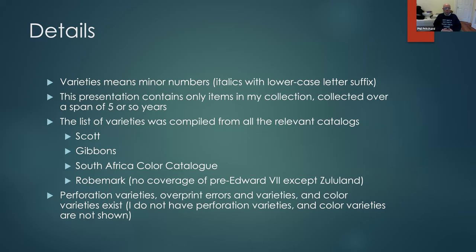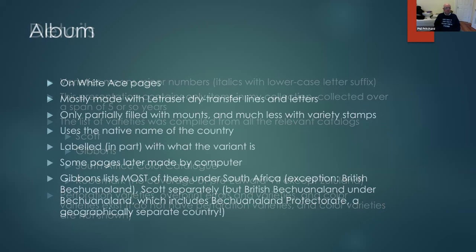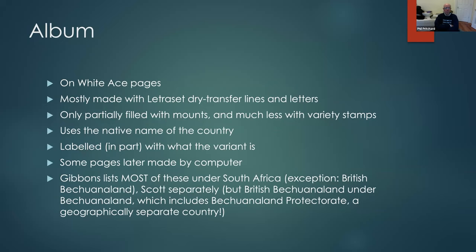There are perforation varieties, overprint varieties, and color varieties. I don't have any perforation varieties, and the color varieties listed at the end I'm not showing. I had an album made on white ace pages, mostly made with letter set dry transfer lines and letters. Most of the pages were only partially filled, and even less so in terms of variety stamps because they're very extensive and I only have a few. I used the native name of the country rather than the catalog name, and provided labels saying what the variant is on the page.